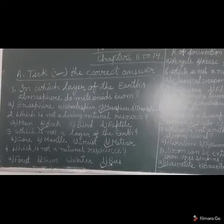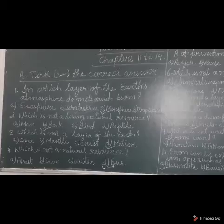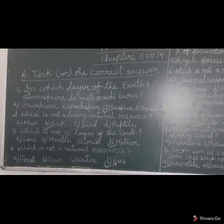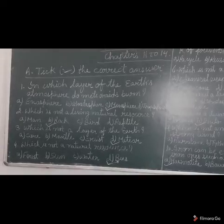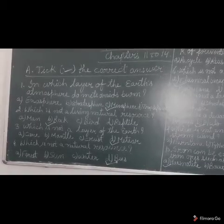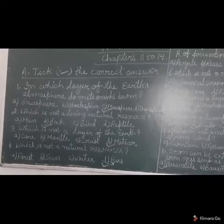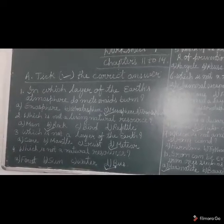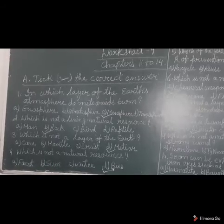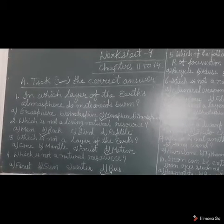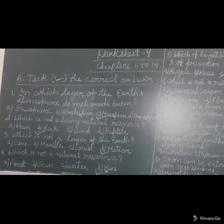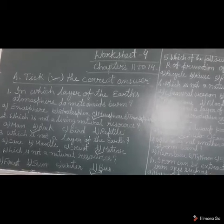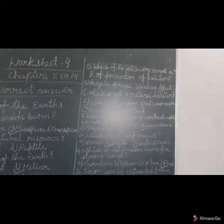Which is not a natural resource? Question number 4, which is not a natural resource? So the options are forest, sun, water and bus. So what will be the right answer? Bus. Because forest, sun and water are natural resource. But bus is not a natural resource. It is man-made.